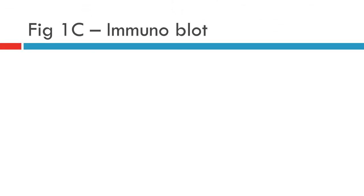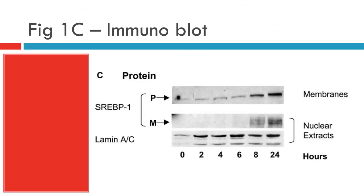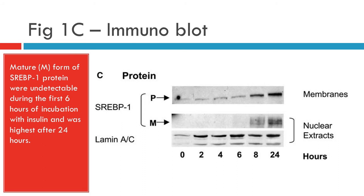Figure 1C shows an immunoblot — time course of appearance of SREBP1C precursor and mature proteins. Membrane pellet and nuclear extract were subjected to PAGE and analysed by immunoblotting using an antibody against the precursor and mature forms of SREBP1. Lamin AC was used as a control for the nuclear extract. The blots are representative of three independent experiments.